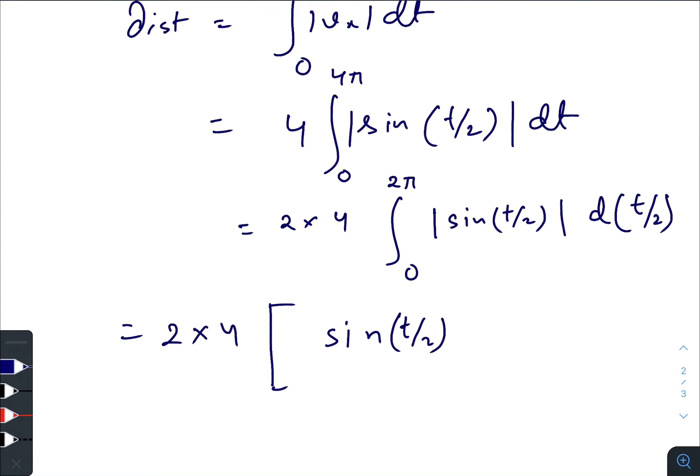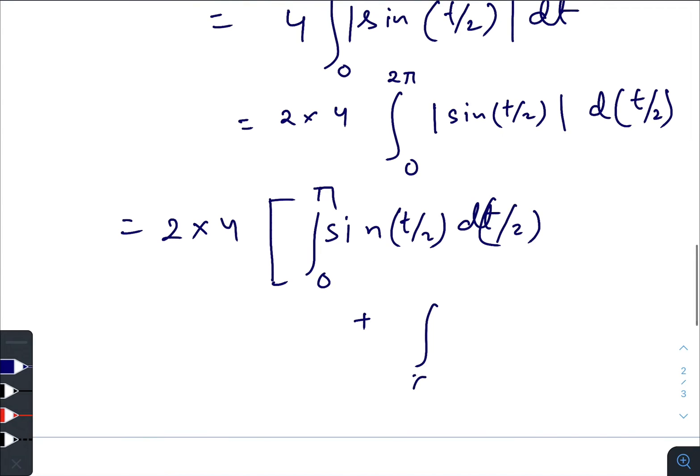Now just breaking it into two parts because mod is there: from t/2 = 0 to π, and plus π to 2π, sin(t/2) d(t/2).